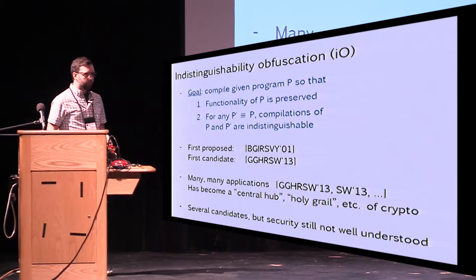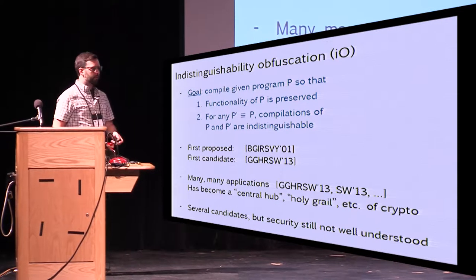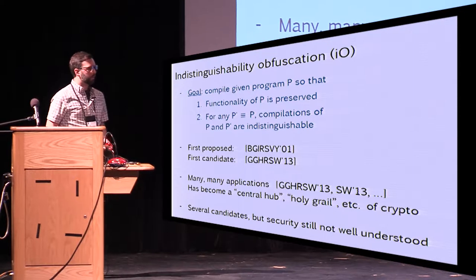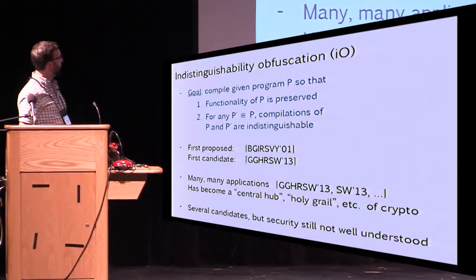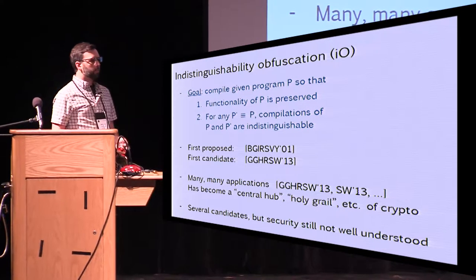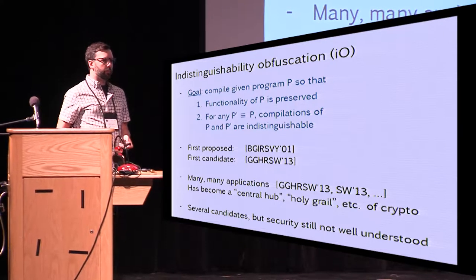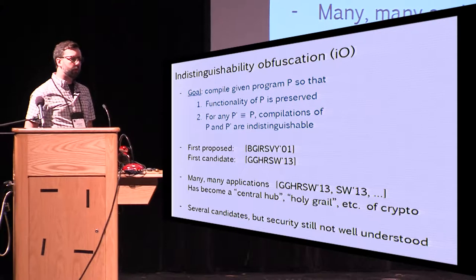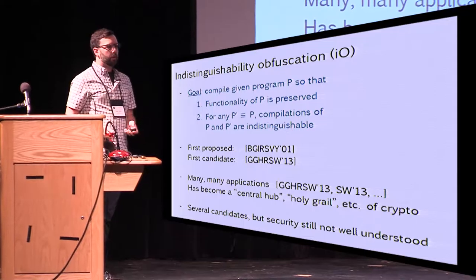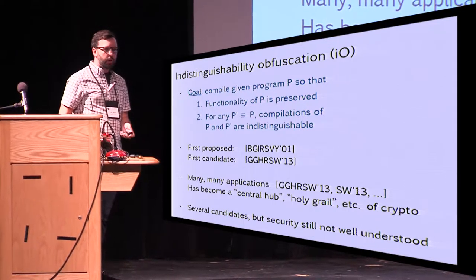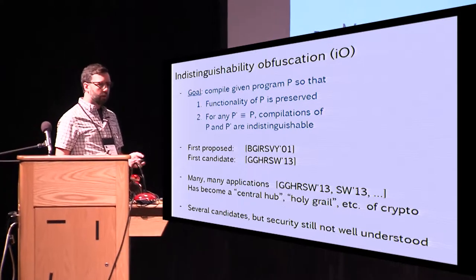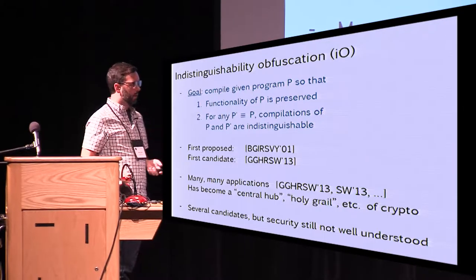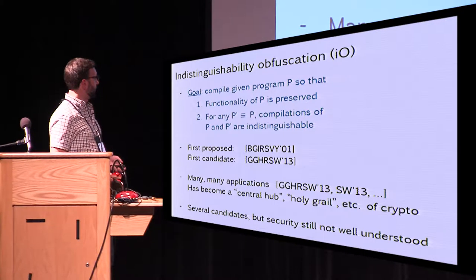If you've been in this room today, you probably already know what IO is, but let me just say one slide about it anyway. IO is this notion of compiling a program P in a way that preserves its functionality, but for any program P prime which is equivalent to it, the compilations of these two are indistinguishable from each other — hence indistinguishability obfuscation.